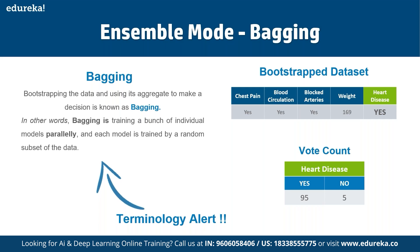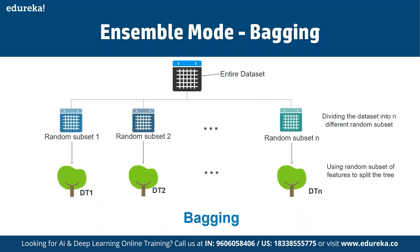For example, in a bootstrap dataset for heart disease prediction, features like chest pain, blood circulation, and blocked arteries are used. The yes count might be 95 and no count 5. We then create multiple decision trees using this bootstrap dataset. Since we are making a random forest, we don't consider the entire dataset — we use only a random subset of variables at each step.